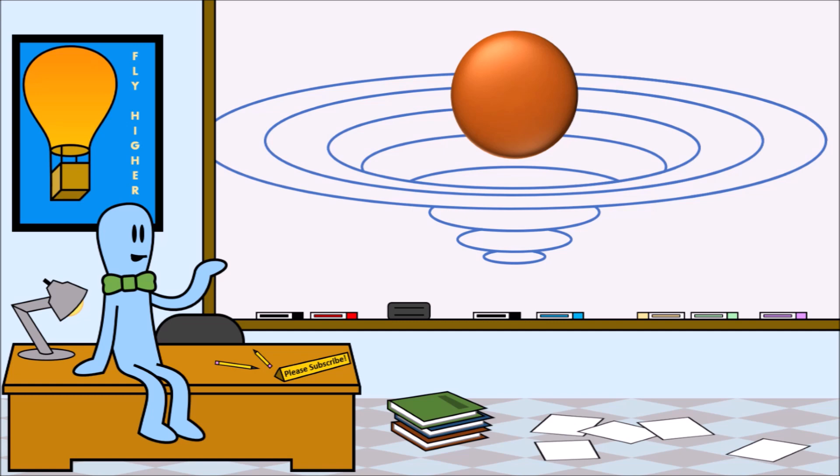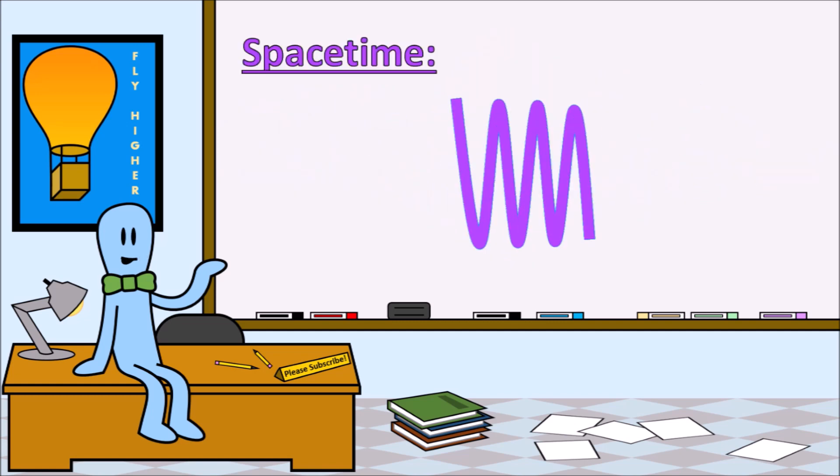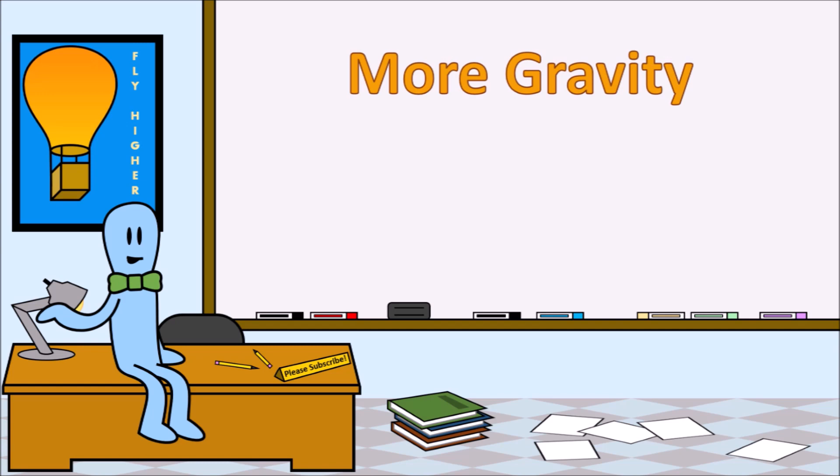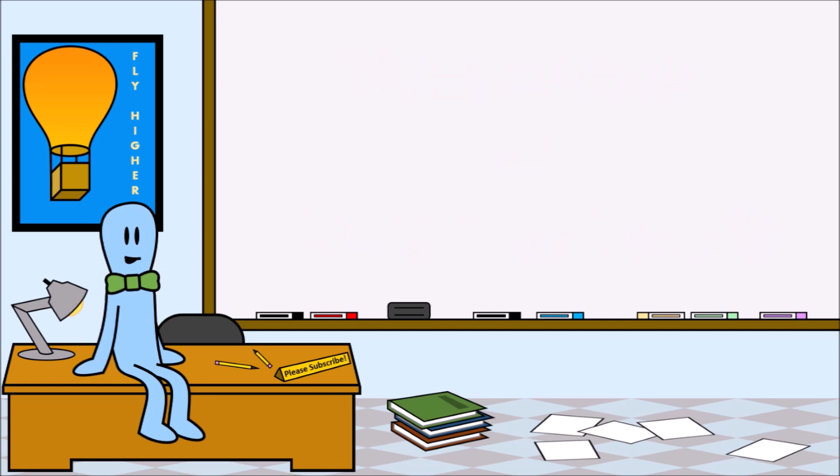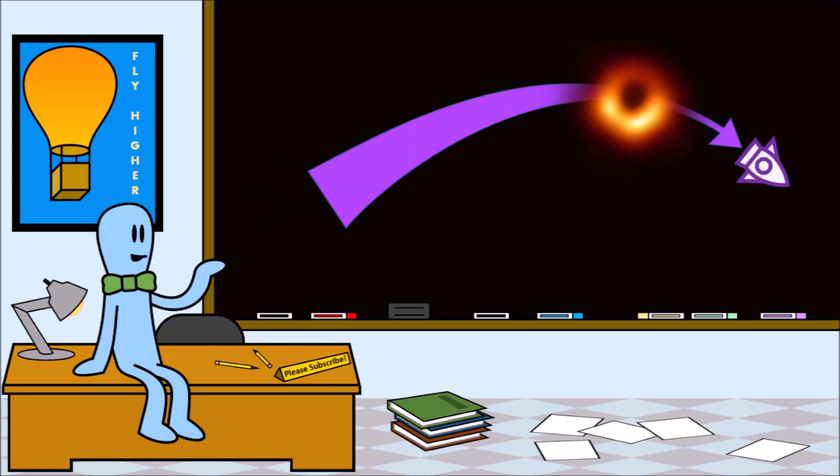Gravity is another potential tool we could use for time travel. Gravity warps space-time, and to simply put it, the more gravity you experience, the more you travel into the future. One of the easiest ways we could accomplish this method of traveling into the future is to take a spaceship, orbit around a black hole, but not too close, and we'd be traveling into the future because of the increased gravitational pull.